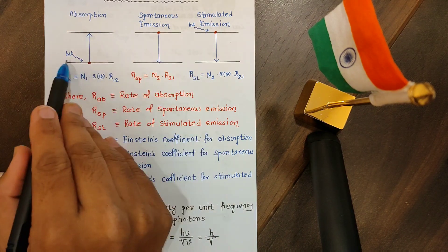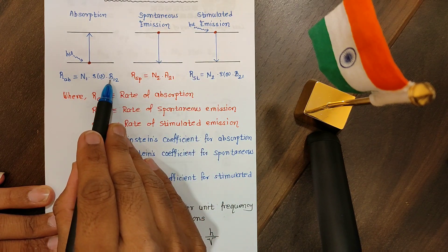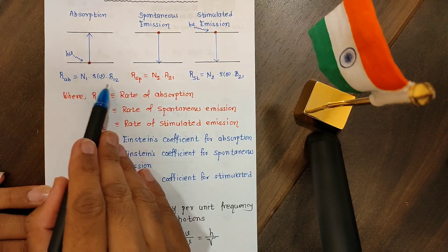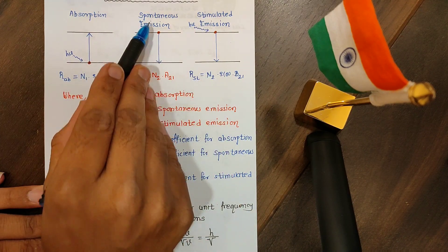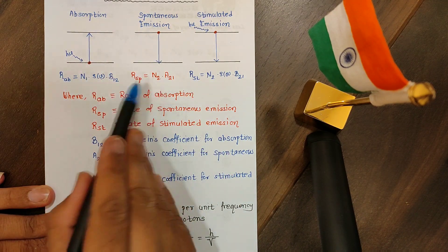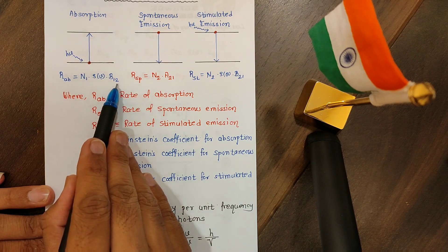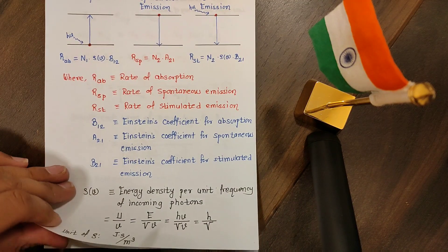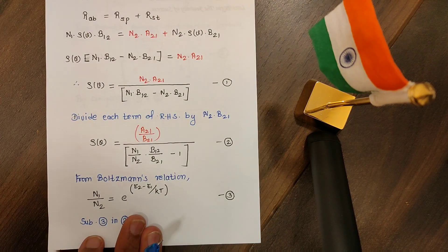Here we are using the subfix 21 because the transition is from level 2 to the level 1. Remember for spontaneous process I am using the coefficient a, but for the stimulated, where we require external photon, the coefficient used is b.